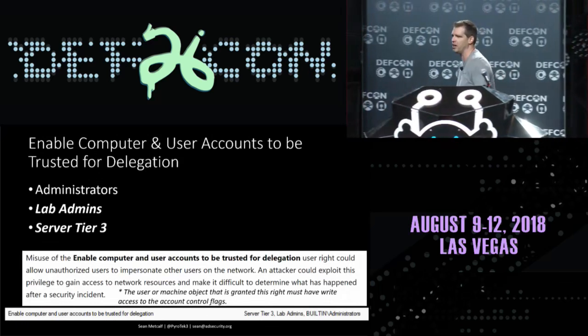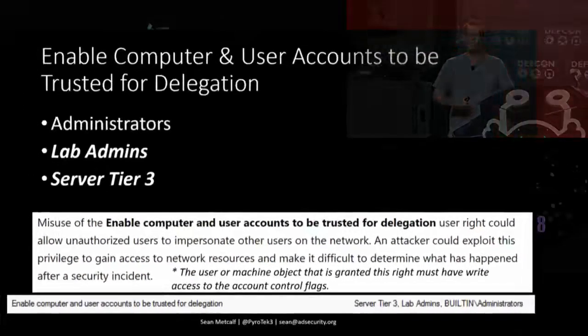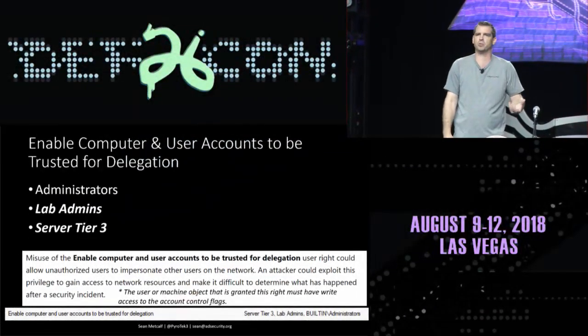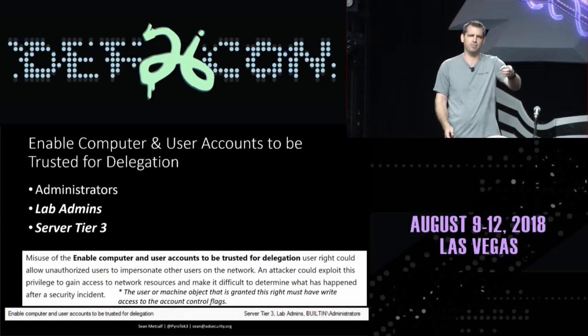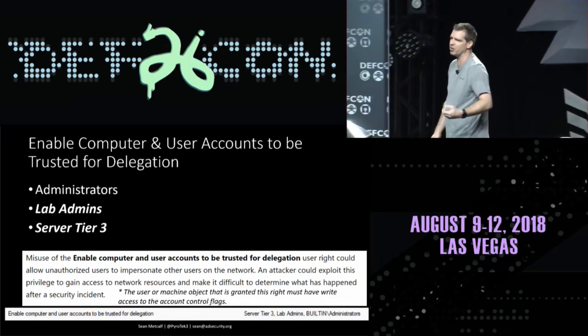Trusted for delegation is a really interesting right. Kerberos delegation is impersonation — when you configure a computer or account with the ability to delegate, they can impersonate that user for Kerberos services on the network. The user right configured in user rights assignments for domain controllers enables accounts to set up and configure Kerberos delegation on those accounts. Most of these groups will have full control over those accounts because they have control on the OUs.